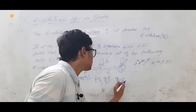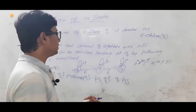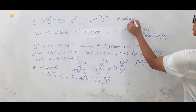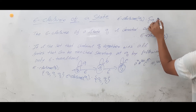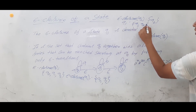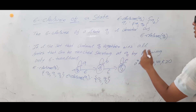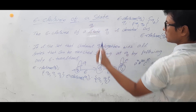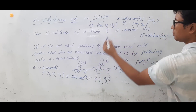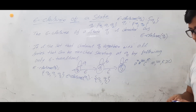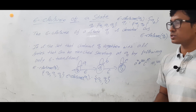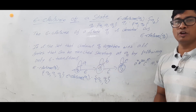Epsilon-closure(q2) is just {q2} because from q2 on epsilon you are not going anywhere. To summarize: epsilon-closure(q0) is {q0, q1, q2} because from q0 on epsilon you can reach q1, and from q1 you can reach q2, so transitively from q0 on epsilon you can reach q2 as well. That is how we calculate the epsilon closure from an epsilon-NFA. Thank you so much.